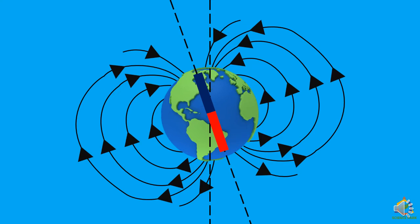Scientist William Gilbert inferred from this that earth itself is a gigantic magnet. The south pole of this magnet is near the geographic north pole of the earth, while the magnetic north pole is near the geographic south pole — slightly confusing, but just remember that if you suspend a magnet freely, the north pole of the magnet points in the north direction.